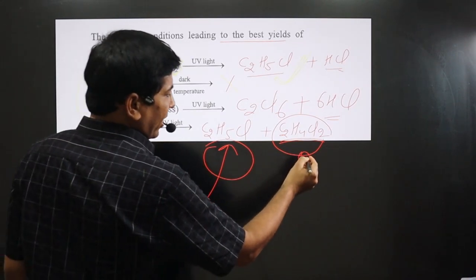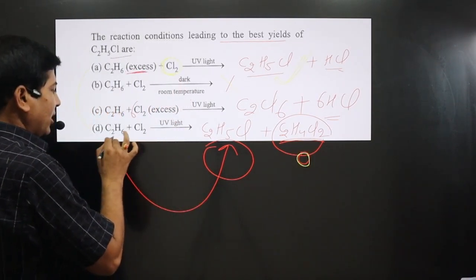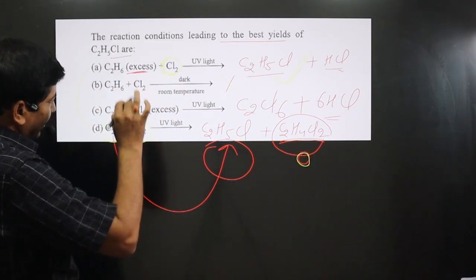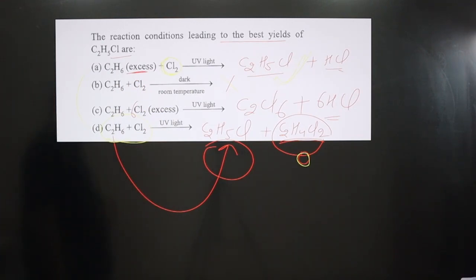In option D, since some quantity of di-halide is also formed, complete conversion is not taking place. So best yield we can see in option A. Option A is correct. If you like this video, please share and subscribe to the channel.